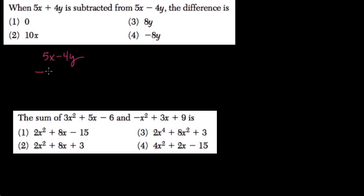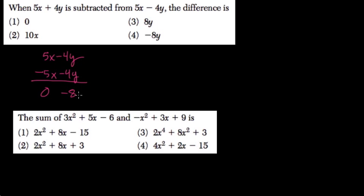So minus 5x, and subtracting 4y is minus 4y. Now I can just think of this as adding 5x minus 5x, and 5x and negative 5x is 0. Negative 4y and negative 4y is negative 8y, which is our answer here — choice 4.